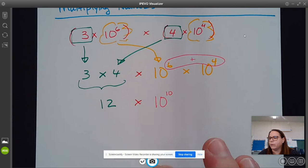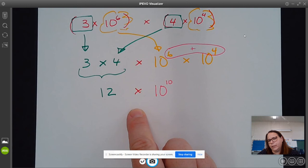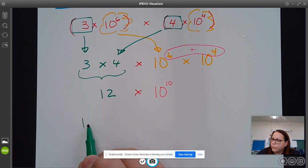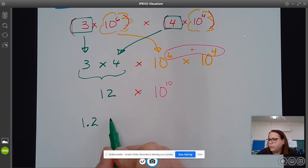However, we want our answer in scientific notation. This is not in scientific notation. So then we have to think to ourselves, what do we need to do? Well, this number is more than 10, but 1.2 is not. 12 is not 1.2.